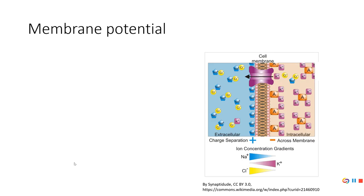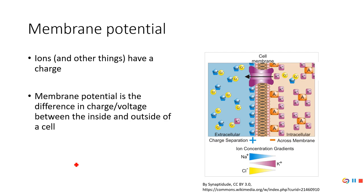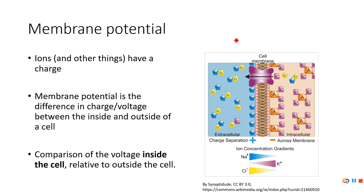This leads us to membrane potential. Ions such as sodium, potassium, chloride, calcium, and magnesium all have a charge. Membrane potential is the difference in charge between the inside and outside of the cell. What we do is take the charge inside the cell and subtract the charge outside. For example, if the inside is 10 and the outside is 8, our membrane potential would be 10 minus 8, which equals 2 — a membrane potential of plus 2.